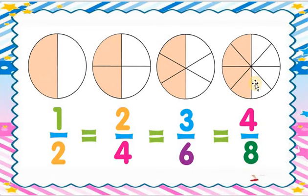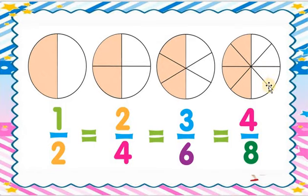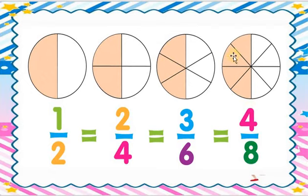Figure number four: how many parts in the whole circle? One, two, three, four, five, six, seven, eight — eight parts. So we write eight in the denominator. How many parts are shaded? Four parts are shaded. So we write four in the numerator, giving us four upon eight.